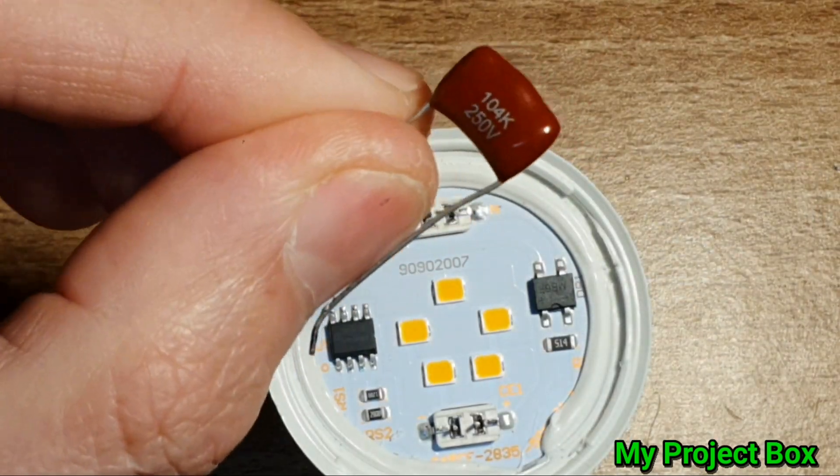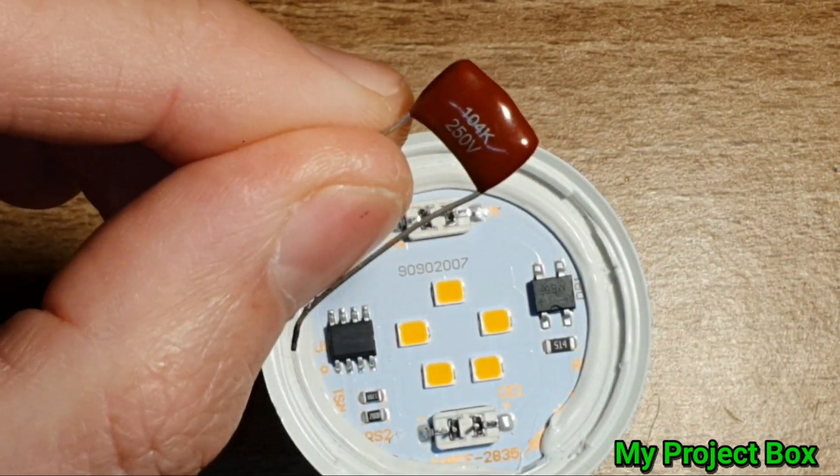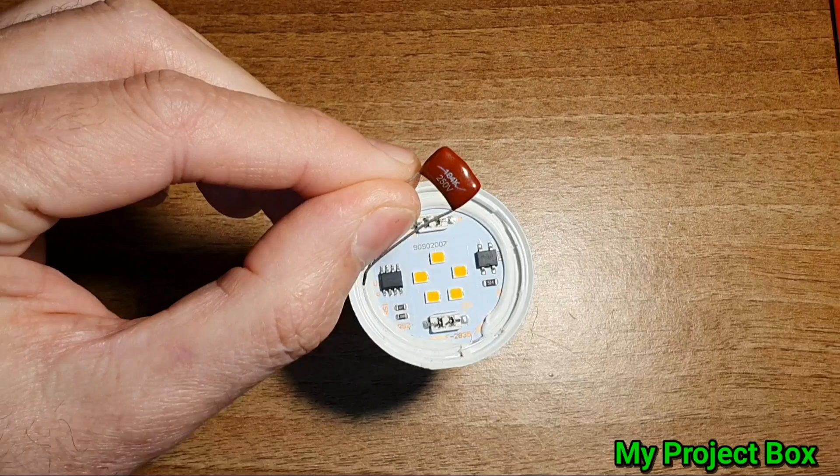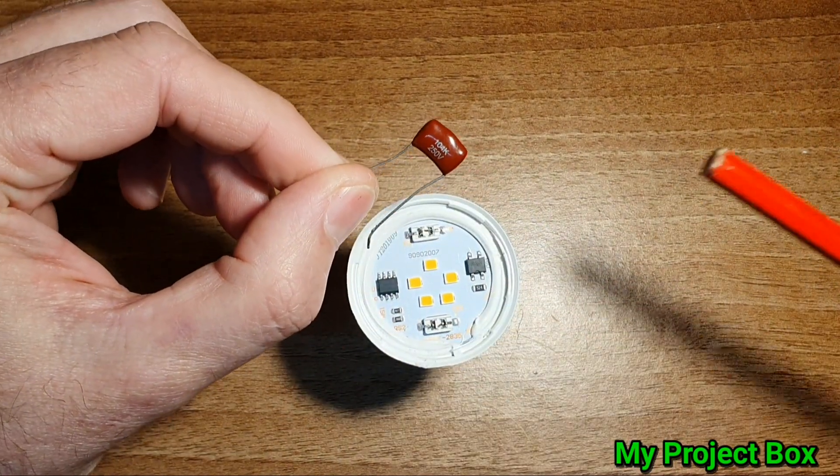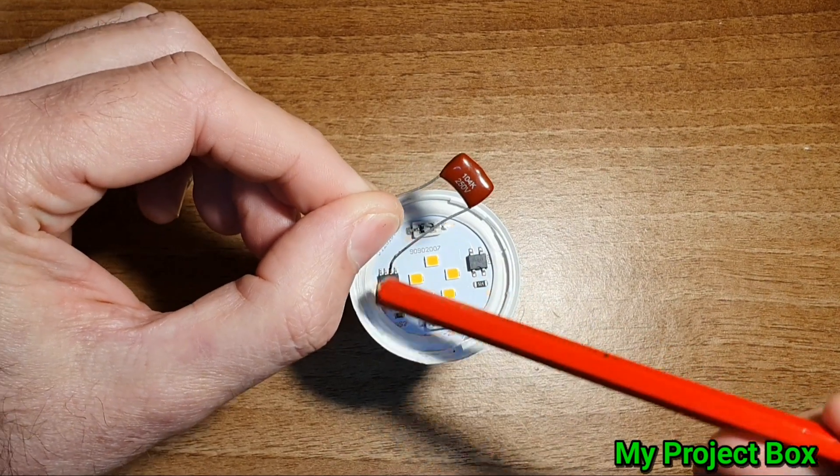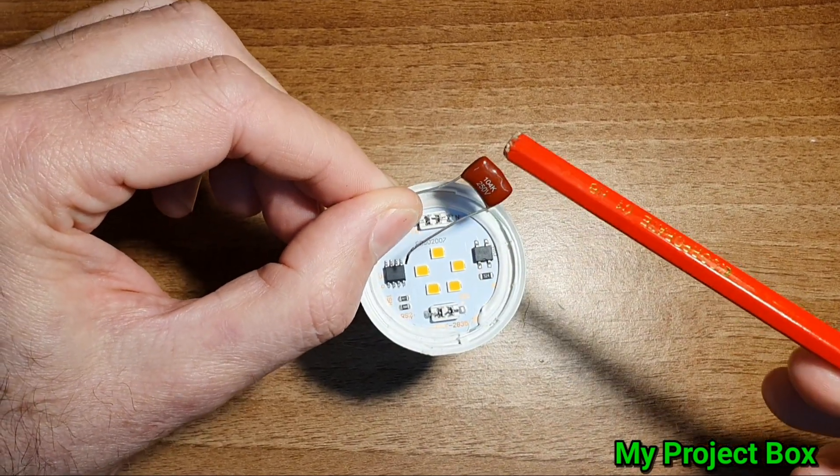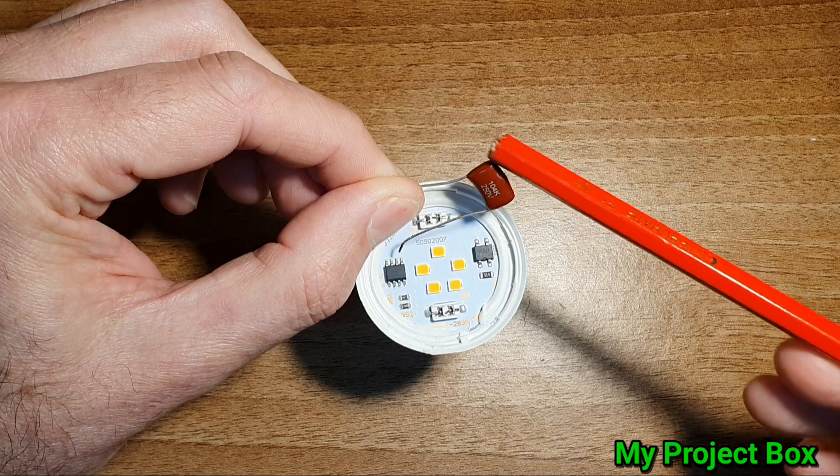What the capacitor does is it acts as a volt dropping circuit. The capacitor will limit, as the LED lamp draws load on the AC side, the capacitor has a type of AC resistance.